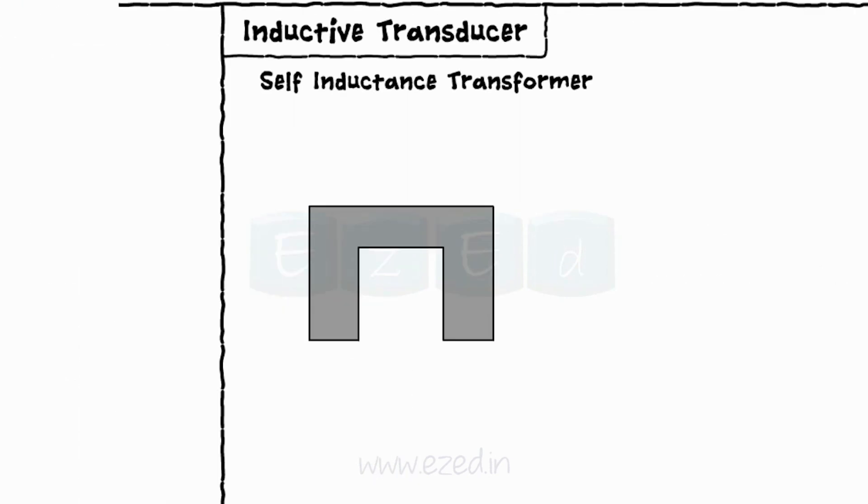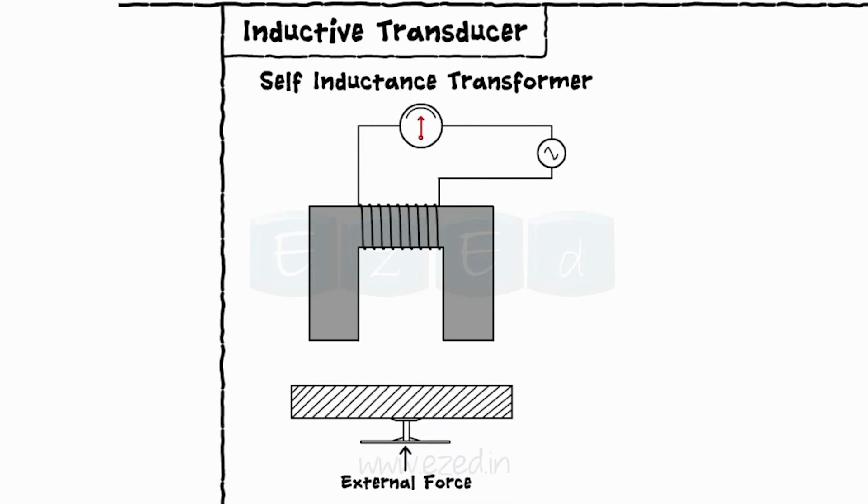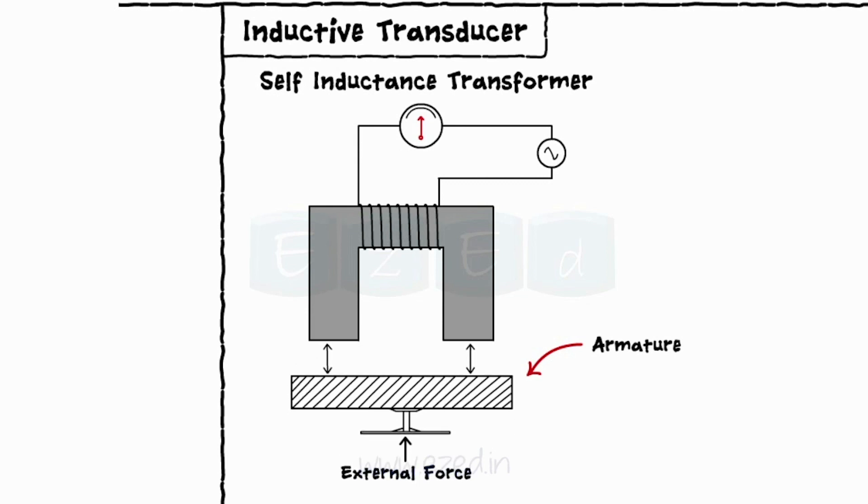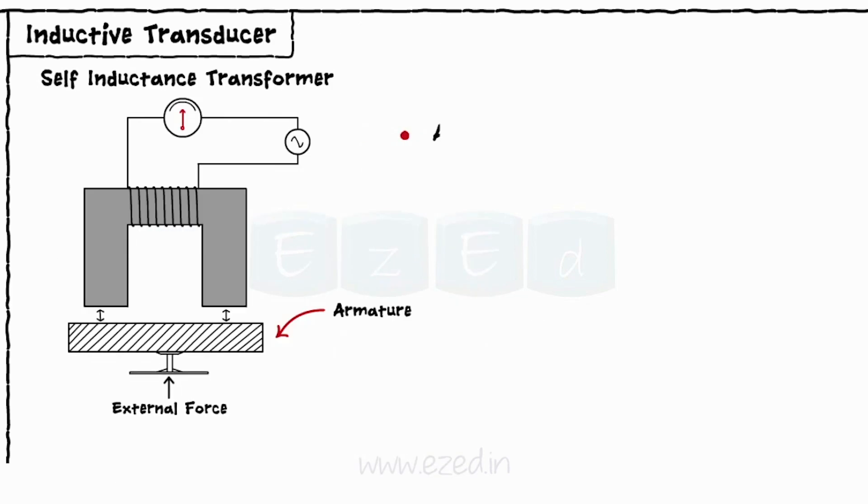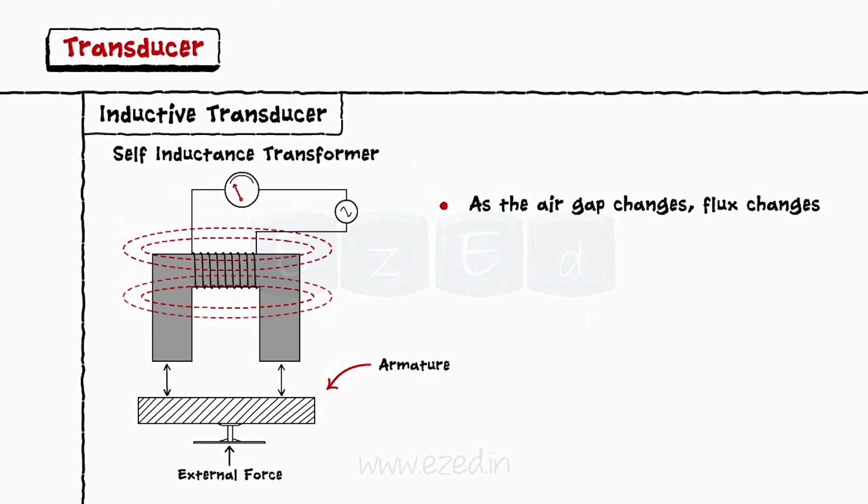In a self-inductance transducer, the magnetic material is connected to the electrical circuit and is excited by alternating current. At the bottom, there is another magnetic material that acts as an armature. As the armature is moved, the air gap between the two magnetic materials changes and the flux generated by the circuit changes. That changes the inductance of the circuit and its output. The output meter directly gives the value of the input mechanical quantity.